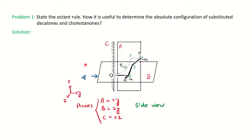The Octant Rule is basically for the correlation of the Cotton effect of the chiral cyclohexanone with their absolute configuration. Here you will have a carbonyl group which divides the space around it into 8 sectors — therefore it is called the Octant Rule — with the help of 3 orthogonal planes A, B, and C.